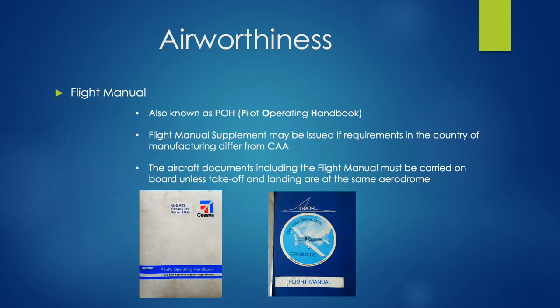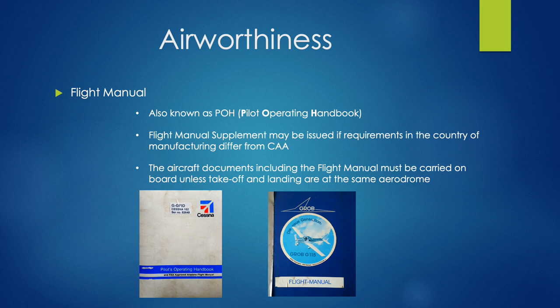Each aircraft will have a flight manual, otherwise known as a Pilot Operating Handbook, which contains all the information for each individual type of aircraft. If we want to know anything about a particular aircraft, we can find it in the Pilot Operating Handbook. It is made by the manufacturer and covers all their recommendations for standard practices — from weights to takeoff distance and all those kinds of things. The aircraft documents, including the flight manual, must be carried on board, with the only exception being if we are taking off and landing at the same aerodrome.